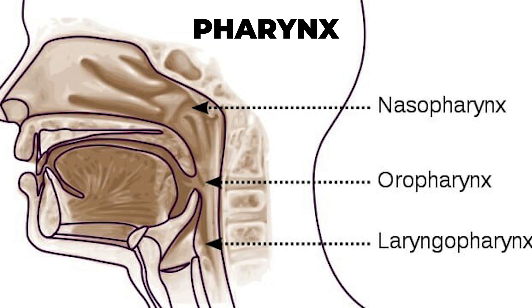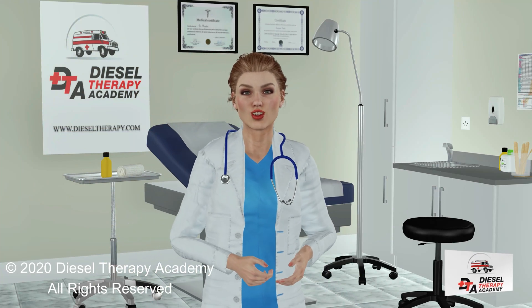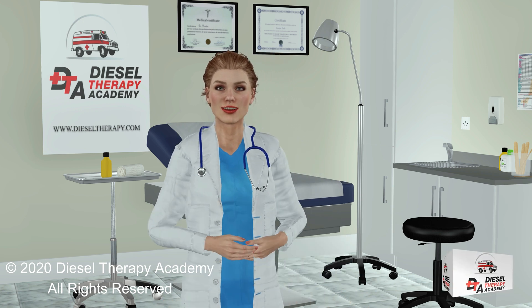The nasopharynx is the portion of the pharynx that is posterior to the nasal cavity and extends inferiorly to the uvula. The oropharynx is the portion of the pharynx that is posterior to the oral cavity. The most inferior portion of the pharynx is the laryngopharynx, which extends from the hyoid bone down to the lower margin of the larynx. The upper part of the pharynx lets only air pass through, while lower parts permit air, foods, and fluids to pass.